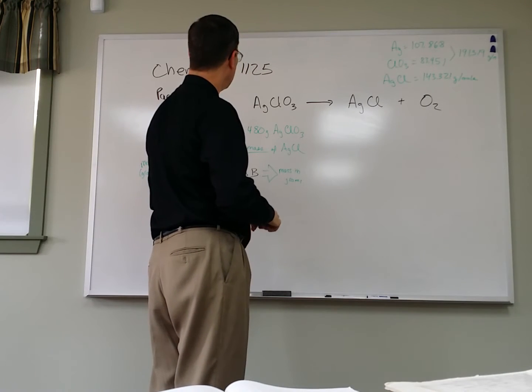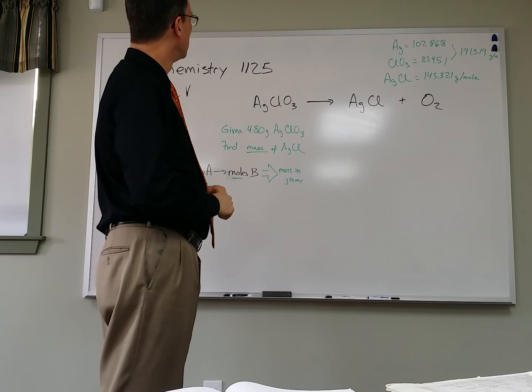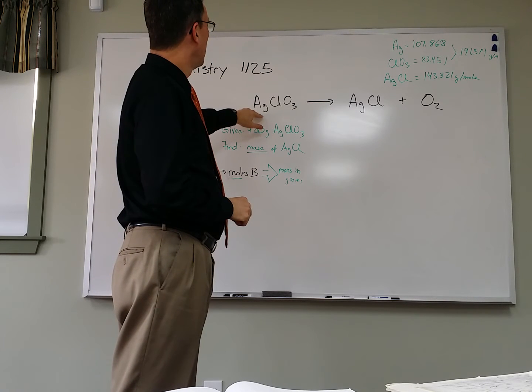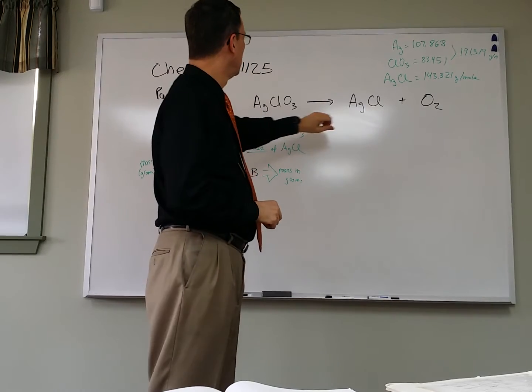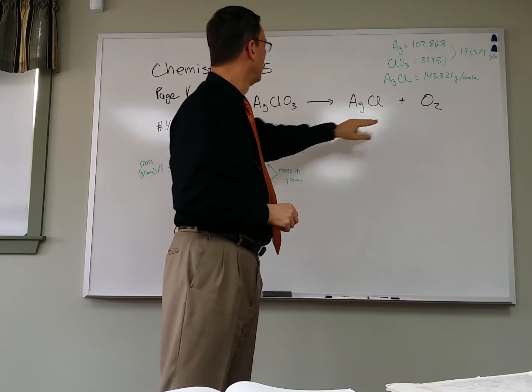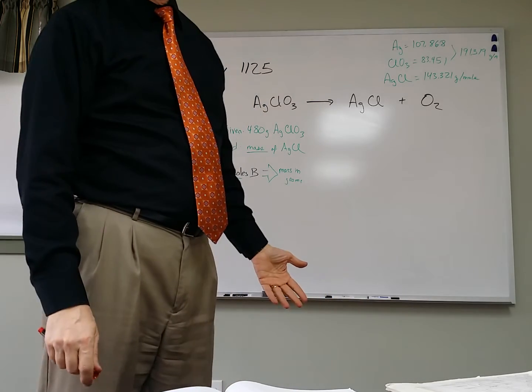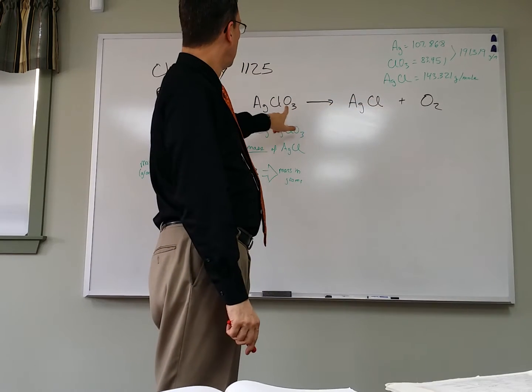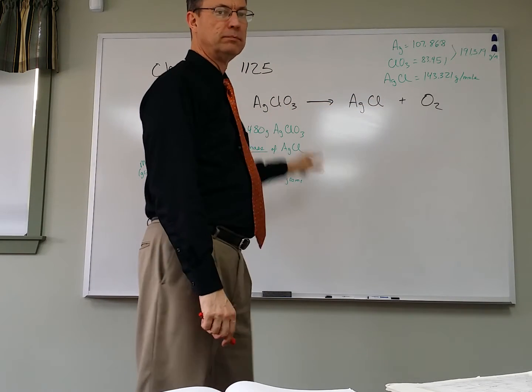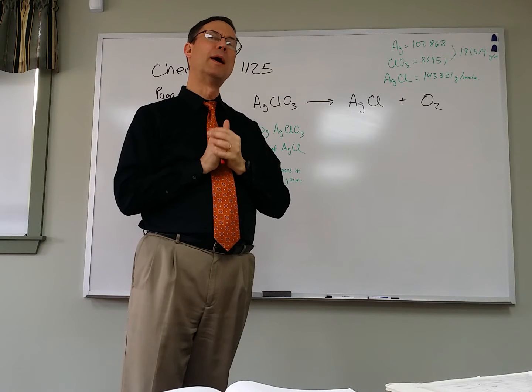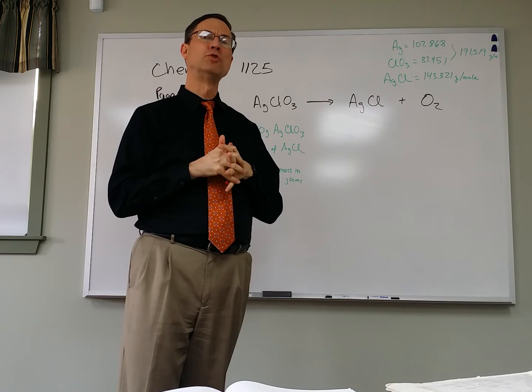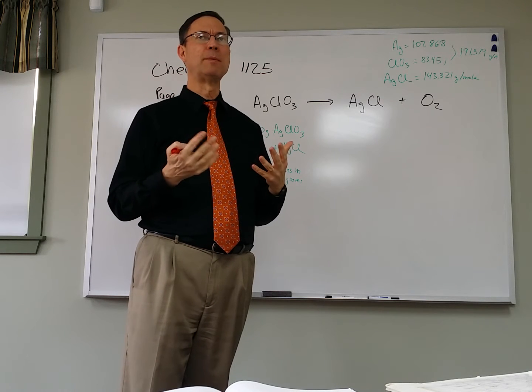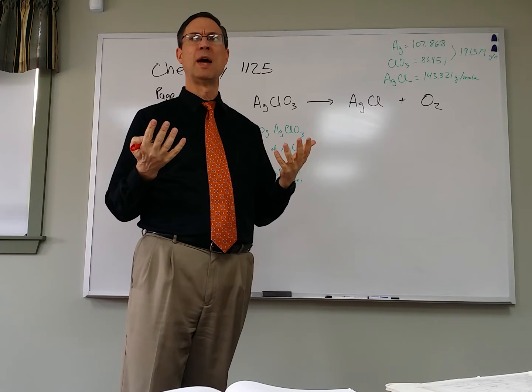So let's look up here and see if we can balance this equation. Now just looking at it, I have 1 silver here, 1 here, 1 chlorine, 1 chlorine, so the problem is the oxygen, right? We have 2 over there, and we have 3 here. Now think back to doing math, even in junior high, and getting a common denominator. So I kind of think of this similar to the common denominator, 2 and 3, what's the common denominator? It would be 6.